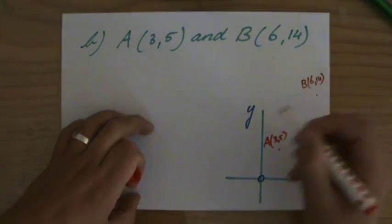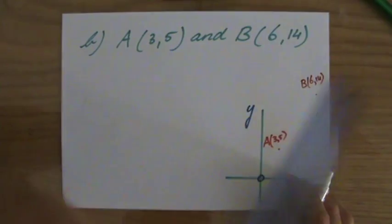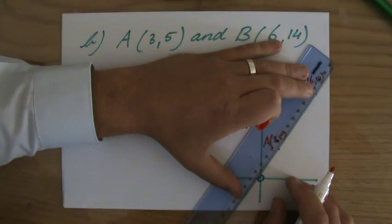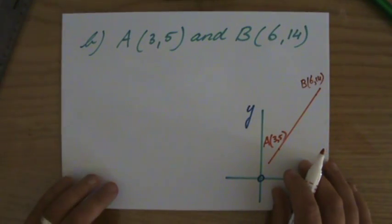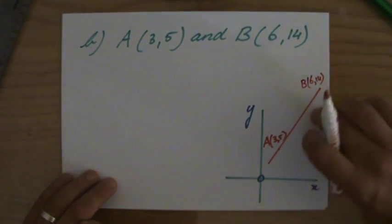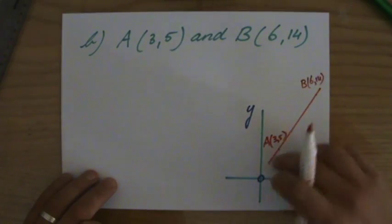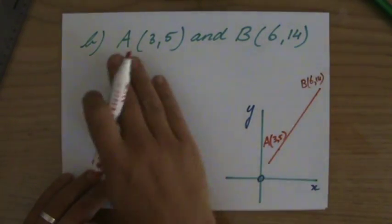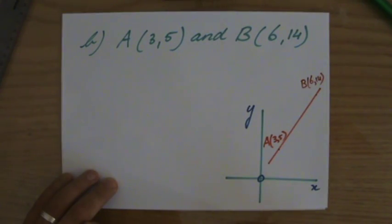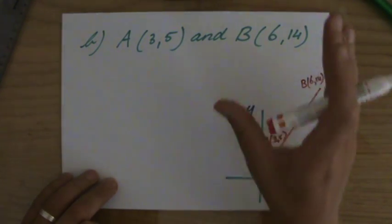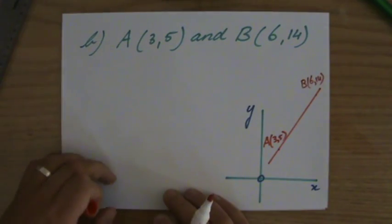Now this is really just a sketch. And why am I doing that? Because when I sketch my line, I can already say a very important, or I can already make a very important conclusion. Because looking at this line, which is roughly the line we are dealing with, what can I say about the gradient? I can say it's positive. I already know I'm looking for a positive gradient.